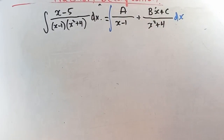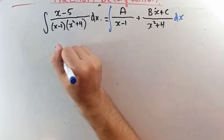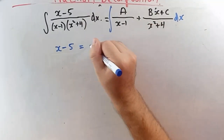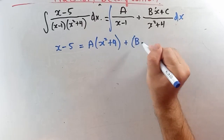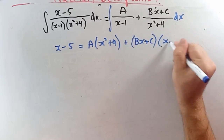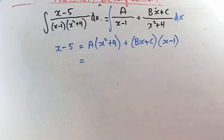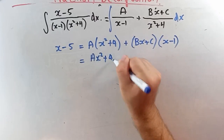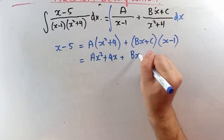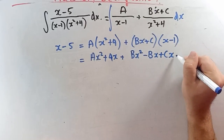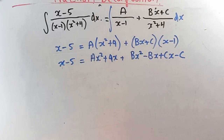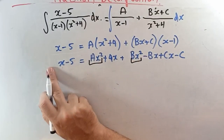We need three equations to solve for a, b, and c. Multiplying through and expanding: x minus 5 equals a(x squared plus 4) plus (bx plus c)(x minus 1). Expanding gives ax squared plus 4a plus bx squared minus bx plus cx minus c.